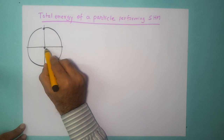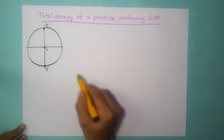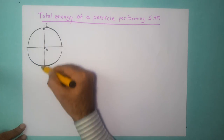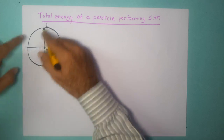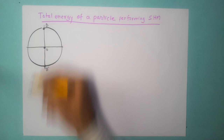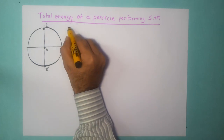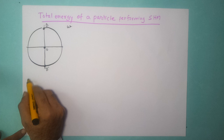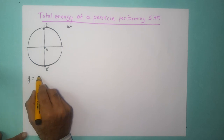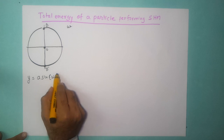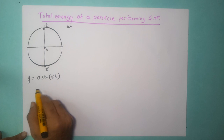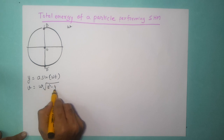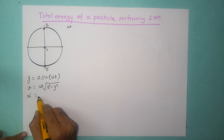This is the equilibrium position O and these are the two extreme positions B and B'. The object is performing simple harmonic motion, so from this point onwards we ignore the circular motion part and just focus on SHM. We know the angular velocity is omega, y is equal to a sine omega t, velocity v is omega into square root of a squared minus y squared, and acceleration alpha is equal to minus omega squared y.